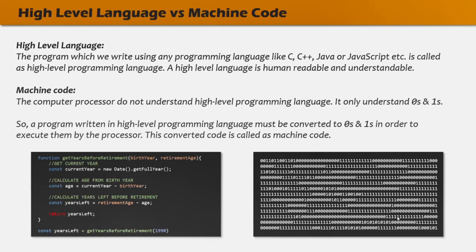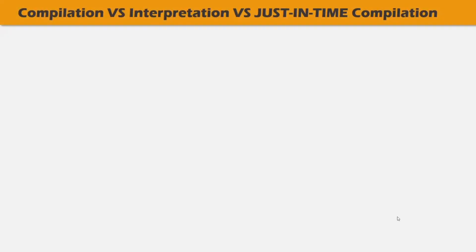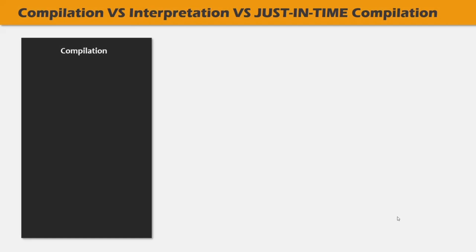The conversion of high-level language to machine code can be done using either a compilation process or an interpretation process. We have tools which help us convert our high-level programming code into machine code, and these tools can be compilers or interpreters. Let's understand them one by one, starting with compilation. In the compilation process, the entire source code is converted into machine code at once, and this is done using a compiler.